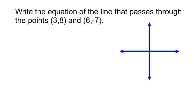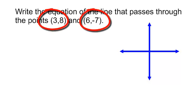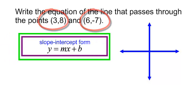We are going to write an equation of a line that passes through the point 3, 8 and 6, negative 7.